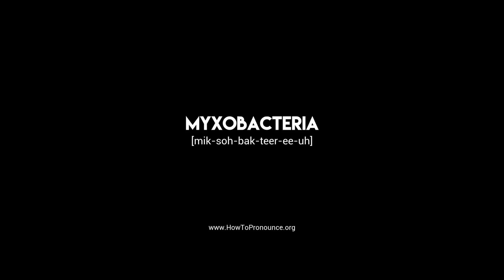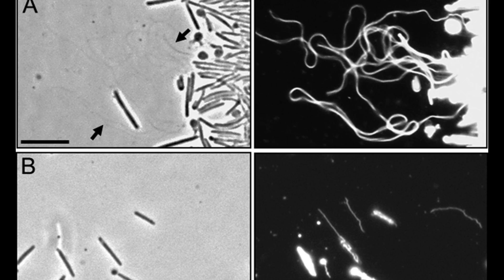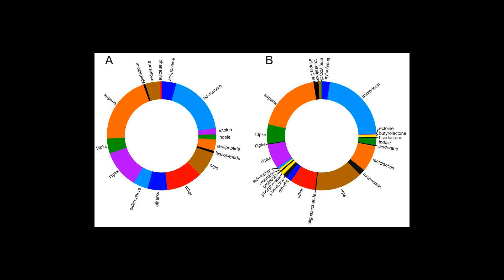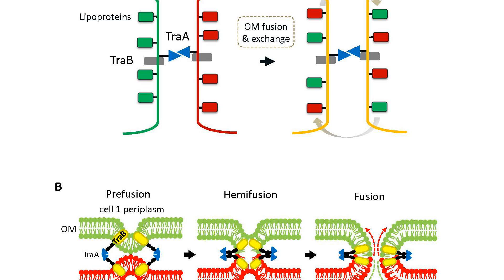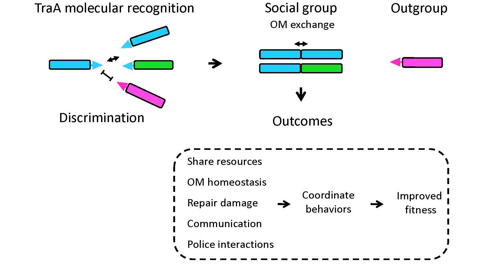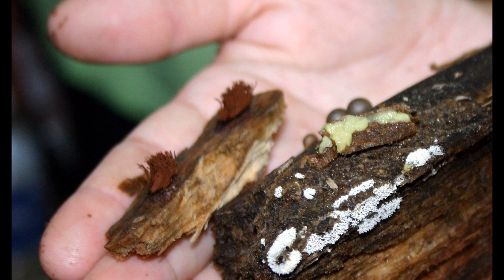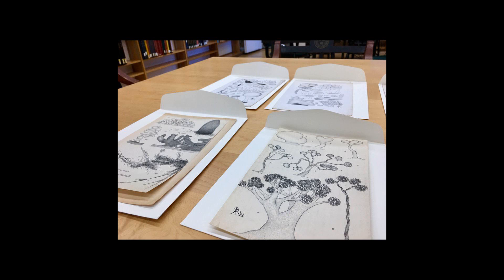Within the fruiting bodies, cells begin as rod-shaped vegetative cells and develop into rounded myxospores with thick cell walls. These myxospores, analogous to spores in other organisms, are more likely to survive until nutrients are more plentiful. The fruiting process is thought to benefit myxobacteria by ensuring that cell growth is resumed with a group, or swarm, of myxobacteria, rather than as isolated cells.